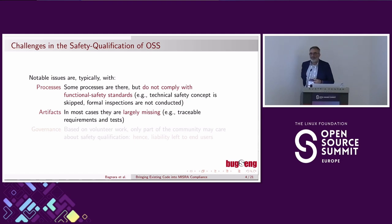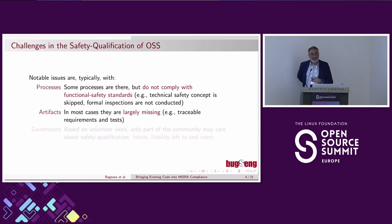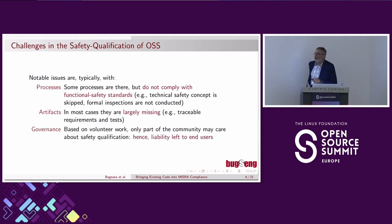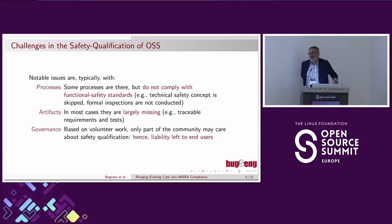There is typically a problem with artifacts — many are missing. For example, requirements are typically missing; the Zephyr project is now investing a lot of energy into retrofitting requirements. Tests are also missing, particularly unit tests. Requirements and tests are both very expensive to develop. Governance is another important point: open source projects are based largely on volunteer work, and only part of the community may care about functional safety qualification. The rest might not be interested and may even see it as an obstacle for the advancement of the project.